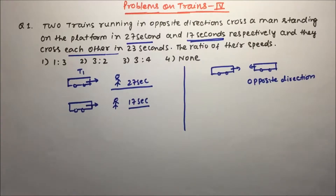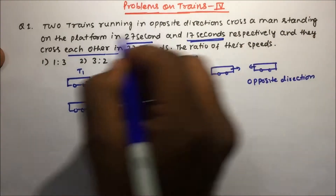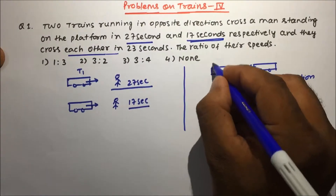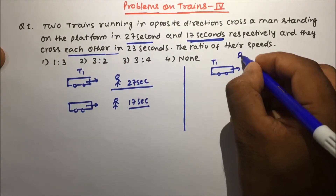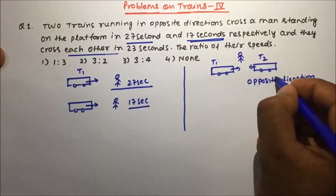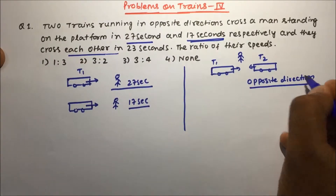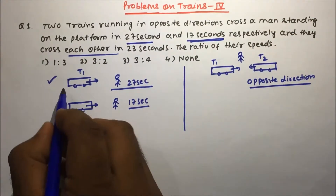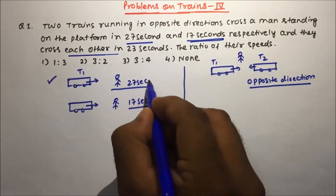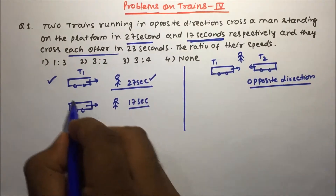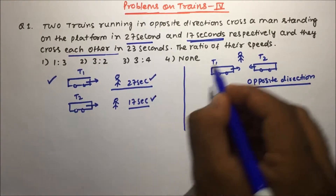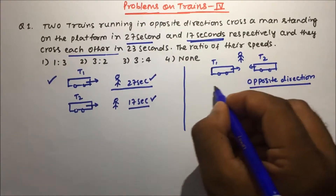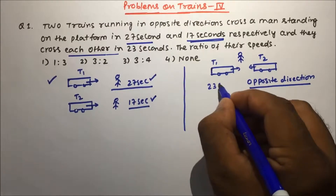The question is: two trains running in opposite directions cross a man standing on a platform. Train 1 crosses the man in 27 seconds and Train 2 crosses the man in 17 seconds. Both trains are crossing each other in 23 seconds.